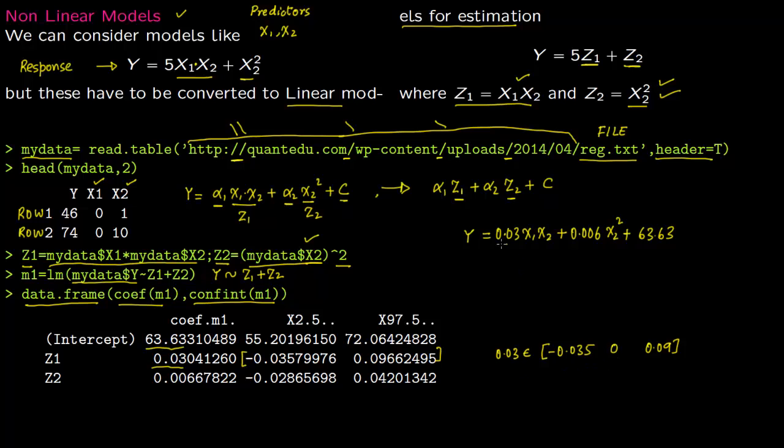Similarly, this 0.006 lies in the interval minus 0.02 to 0.04. So again, 0 lies in this interval, so this is also statistically equal to 0.